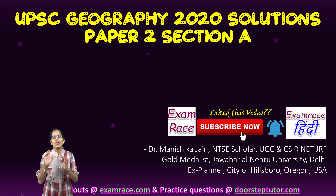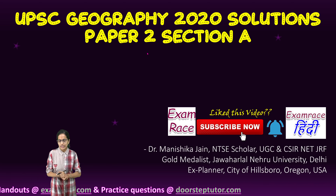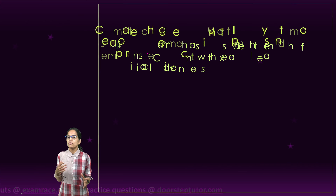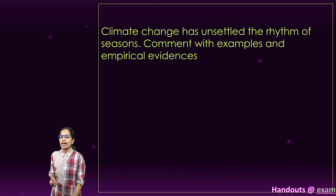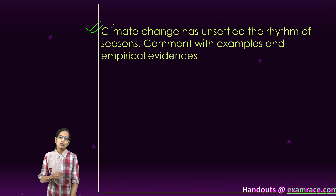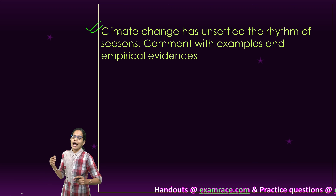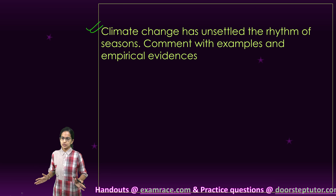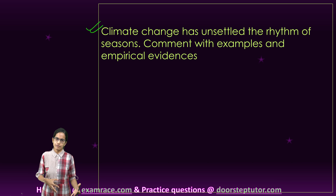Let's focus on Paper 2, which is Geography of India, the very first section. Now we would be discussing the kind of questions which have been asked. Climate change — one of the most important and most expected topics — has unsettled the rhythm of seasons. We have to bring in examples and evidence.